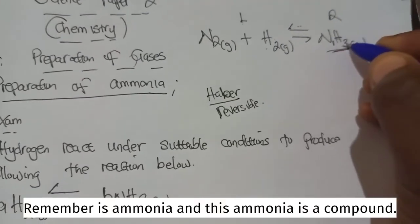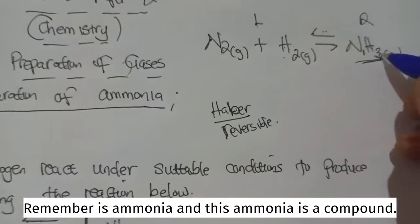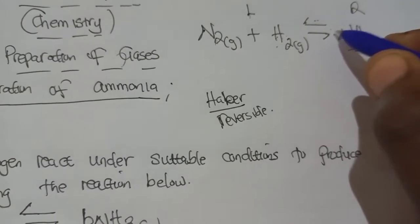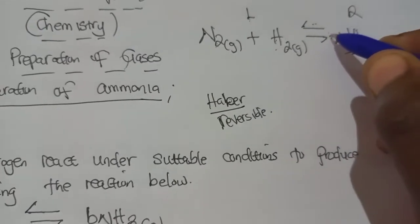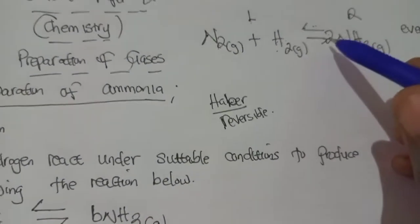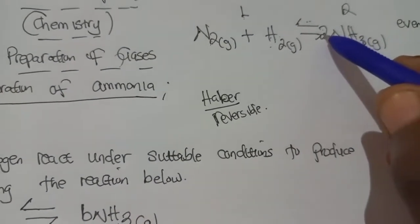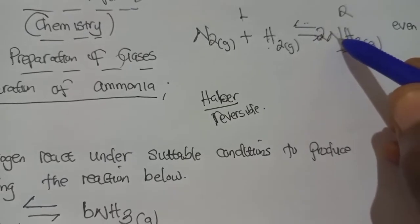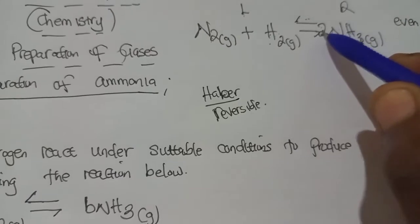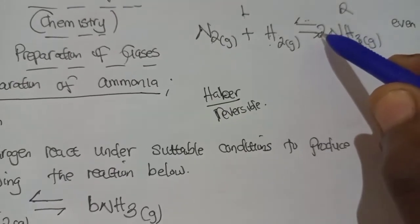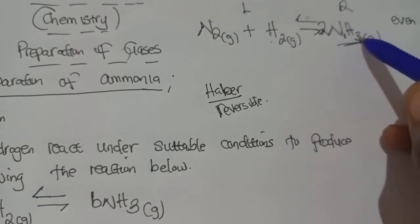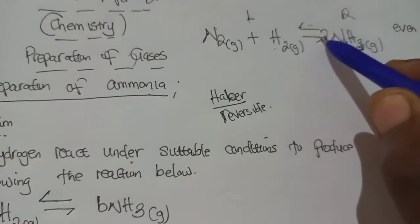Remember, NH3 is ammonia, and this ammonia is a compound. Whatever we try to balance, we put it up front here as the number of moles. We can put any number, so long as the number is even. So, let's start with two. This two makes nitrogen, which didn't have nothing, is going to be two multiplied by one, getting two. So, nitrogen has become two here. Then here we are going to find that hydrogen is three. So, we are going to say two times three, which becomes six.